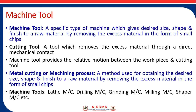Let's see what is meant by machine tool. A machine tool is a specific type of machine which gives desired shape, size, and finish to a raw material by removing excess material in the form of small chips and burrs — a device which performs certain operations on a raw material to get it into final size and shape. That device is called a machine tool.